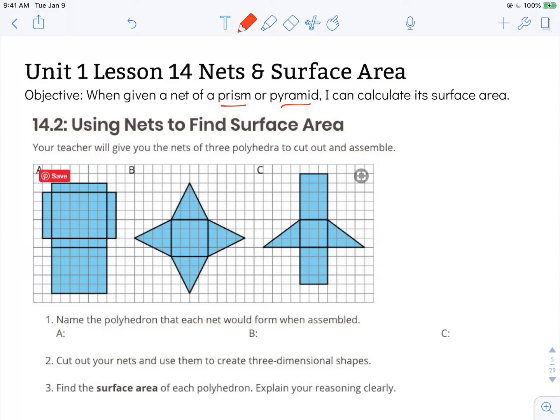Well again, for a pyramid, there's one unique base and the rest of the faces are triangles. And the only one that is a pyramid is B. And then for our pyramids, we name the pyramid after its base. And in that case, this is a square because all sides are the same length. So this is a square pyramid.